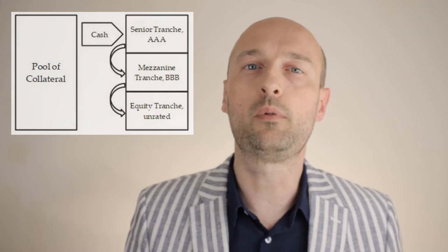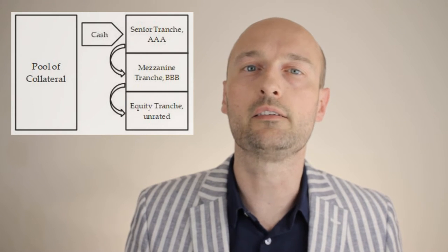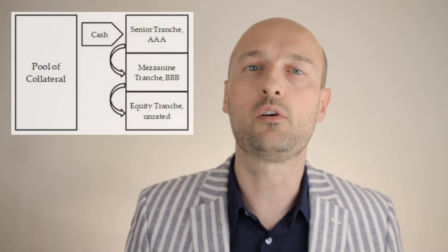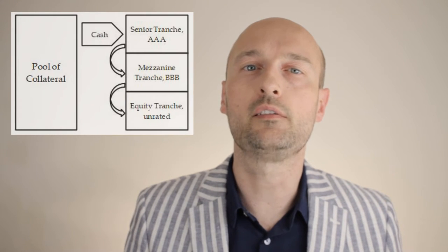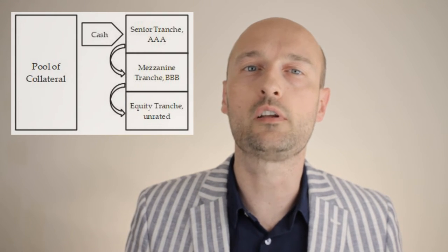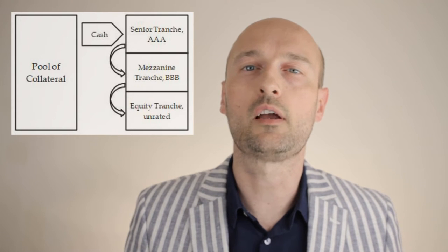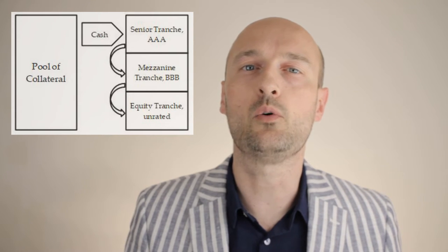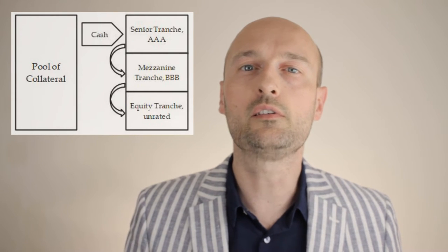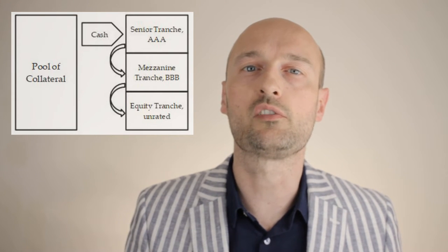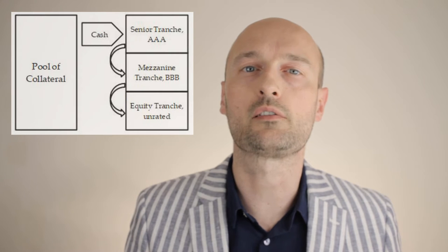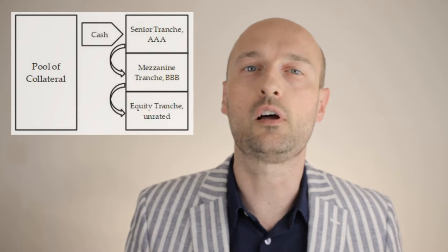A CDO is made up of tranches or slices which deliver the cash flow from interest and principal payments from the pool of bonds in sequence based upon seniority. If some bonds default and the cash collected by the CDO is not sufficient to pay all of its investors, those in the lowest, most junior tranches are allocated losses first. The last tranche to suffer losses from defaults are the safest, most senior tranches of the CDO.